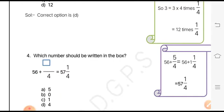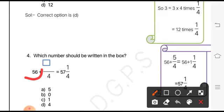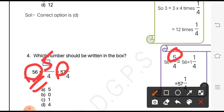The next question is: which number should be written in the box? Here we observe that this is 56 and this is 57. That means only 1 is to be added to 56. Checking for the first option, if we place here 5 and convert it into the mixed fraction, we get 1 and 1 by 4.